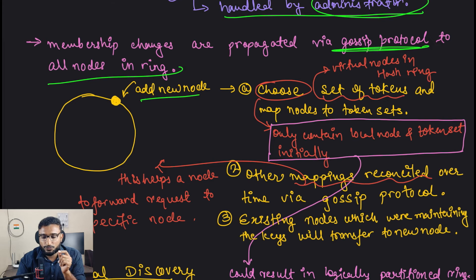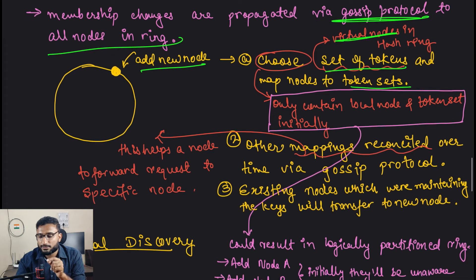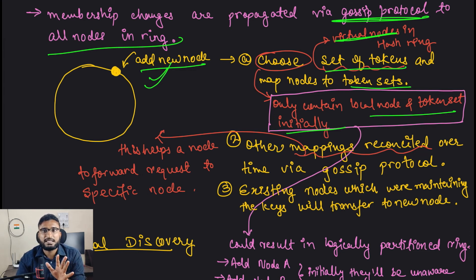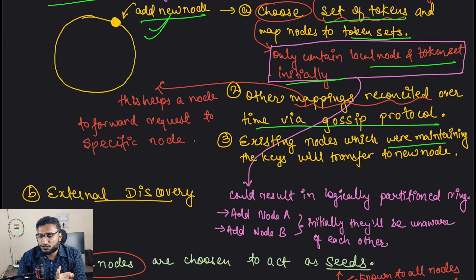Let's take an example. When you add a new node to the ring, you choose a set of tokens and map the node to those token sets - tokens meaning virtual nodes. Initially the new node's mapping only contains its own local node and token set, because it just entered the ring and doesn't have information about others. Over time, other mappings are reconciled via gossip protocol, so it learns which virtual nodes are mapped to which existing nodes.